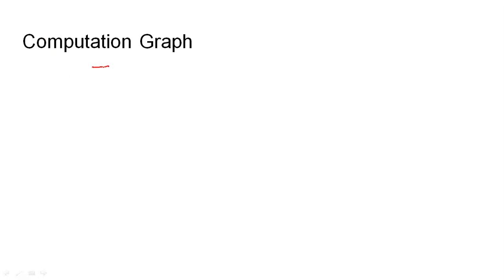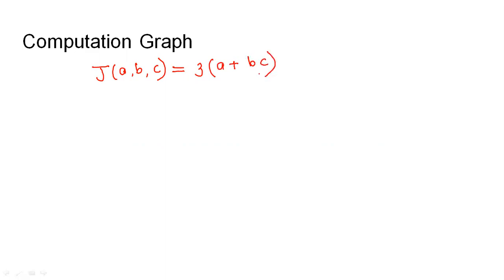Let us look at a very simple example to study the computation graph. Suppose we have a function J of a, b, c — where J is the name of the function and a, b, c are the variables through which the function has been made.